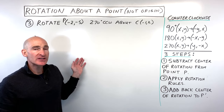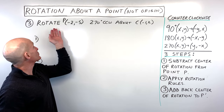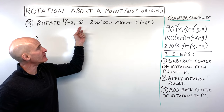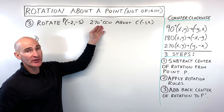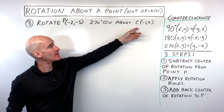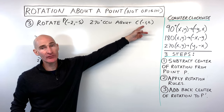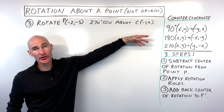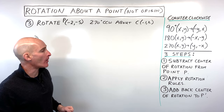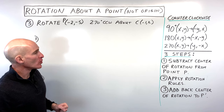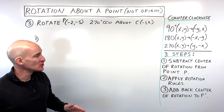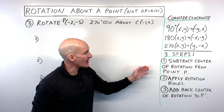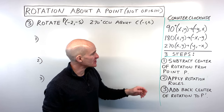Let's try one more example. See if you can pause the video and try example three. We're rotating point P at (-2, -5) 270 degrees counterclockwise about a new center of rotation at (-1, 2) — that's the point you're pivoting about. I'm not even going to draw a diagram; I'll just follow the three steps.